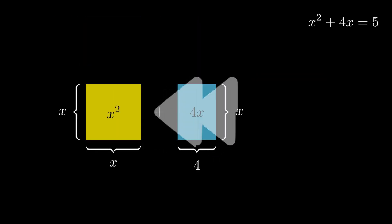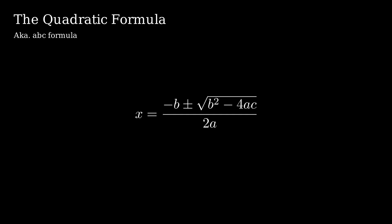But, if we rewind, how do we get this formula? Instead of having a specific equation, let's consider a general second-degree polynomial equation, ax squared plus bx plus c is equal to 0. Just as we did earlier, we can divide both sides with a and then rearrange the fractions.